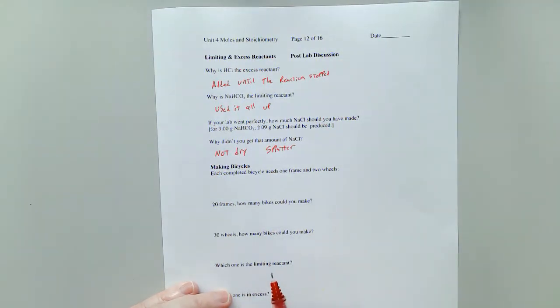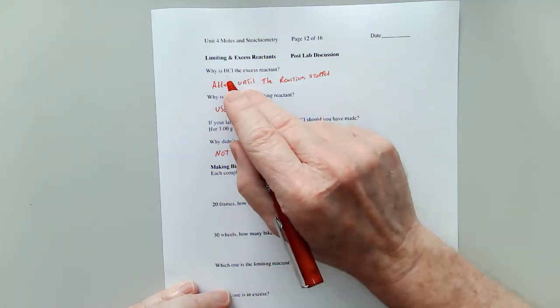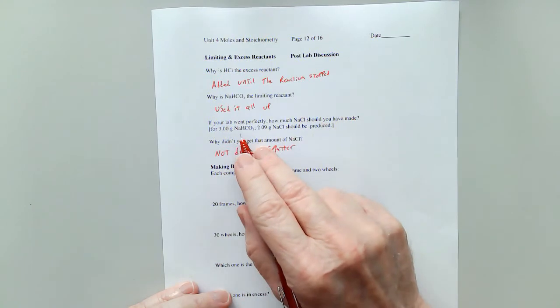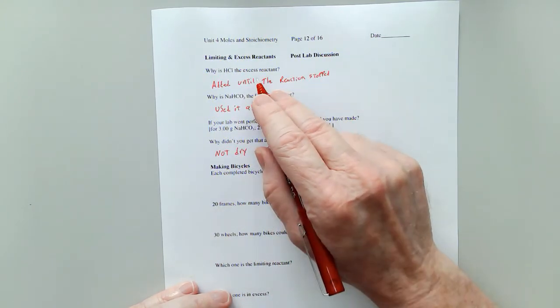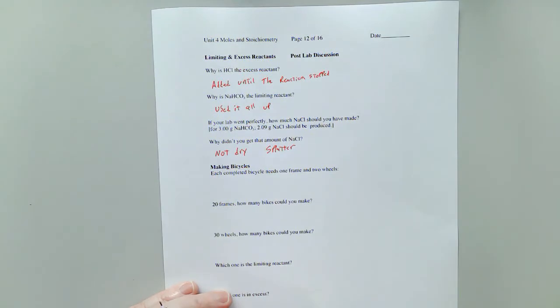Now, this introduces us to the idea that you had too much HCl for the amount of baking soda that you started with. HCl is the excess reactant, and the NaHCO3, the baking soda, is the limiting reactant. Let's think about that in terms of something that's a little easier to understand, making bicycles.